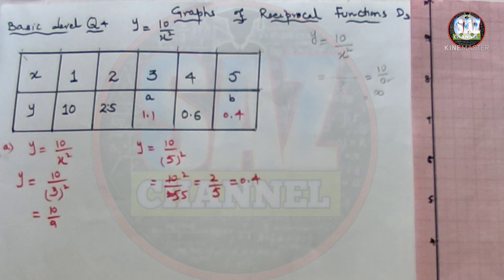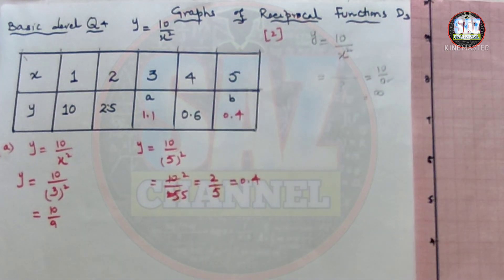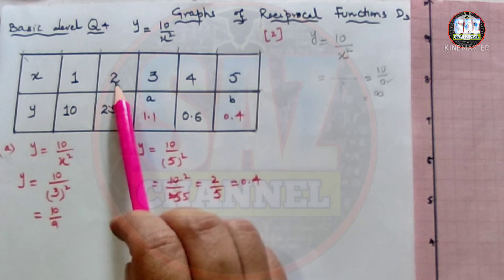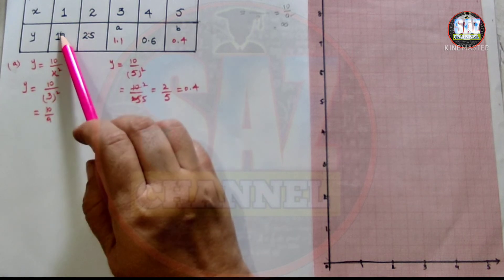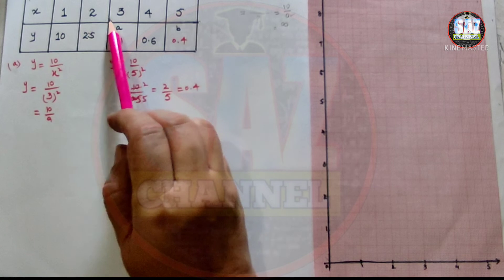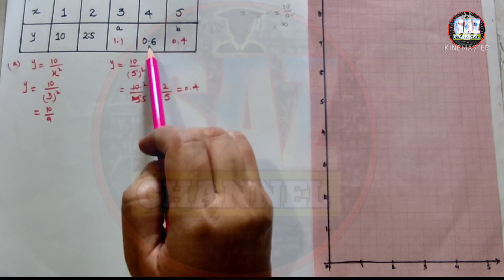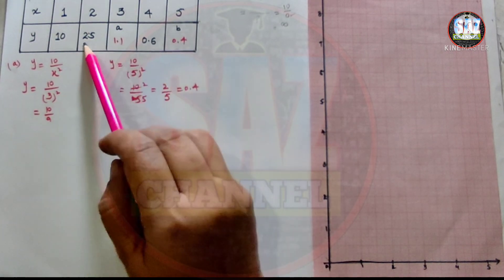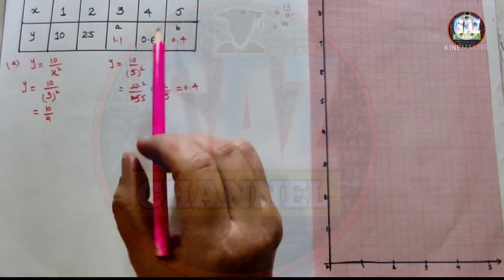Be careful while completing the table, as it can give you two easy marks in O-Level examinations. Observing the table: as x increases from 1 to 5, the y values go from 10, to 2.5, to 1.1, to 0.6, to 0.4 — the values of y are decreasing. This is an important pattern to observe.